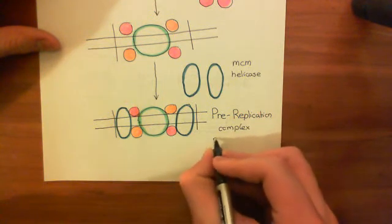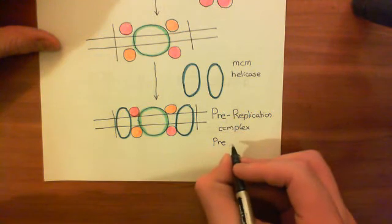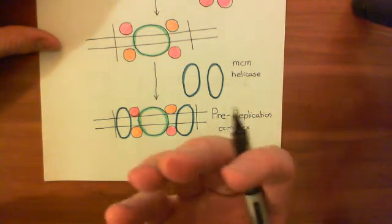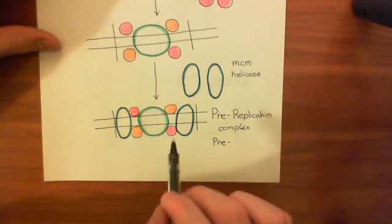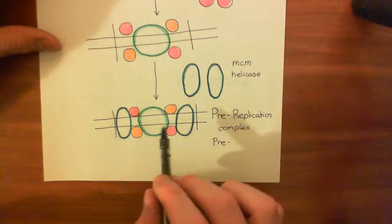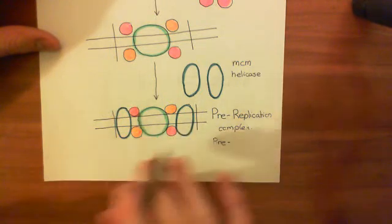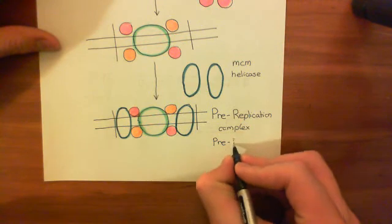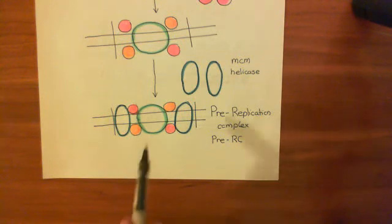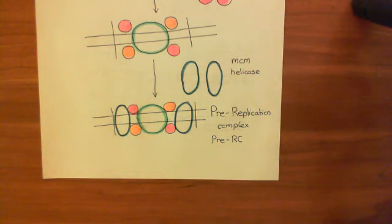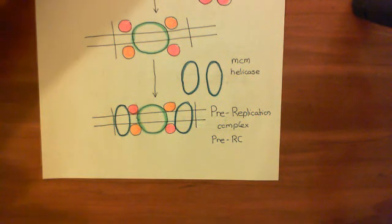These pre-replication complexes are going to be converted, when we move into S phase, into complexes that will actually move along the DNA - they're going to be used for DNA polymerase to mount on. We'll modify them slightly before DNA polymerase can actually mount on, but in essence we've started the preparations. So in the G1 phase of the cell cycle, on every origin of replication on every chromosome, you are forming these pre-replication complexes, ready to dock DNA polymerase when we move into the S phase.